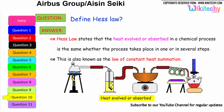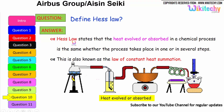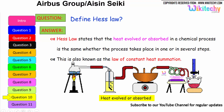Define Hess's law. This is one of the very important questions. Hess's law states that the heat evolved or absorbed in a chemical process is the same whether the process takes place in one or in several steps. This is also known as the law of constant heat summation.